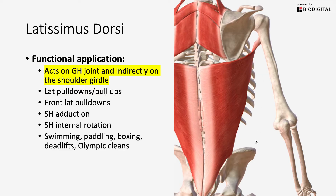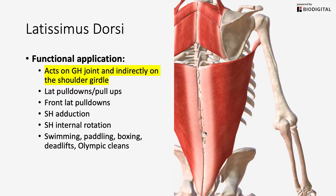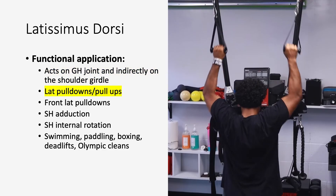Even though the lats have this broad attachment along the thoracolumbar fascia and your spinous processes, they really do not have too much contribution to creating movement or motion in your lower back or lumbar spine. So they're going to be primarily stable in that region and act on your upper extremity.